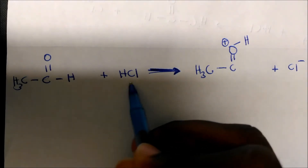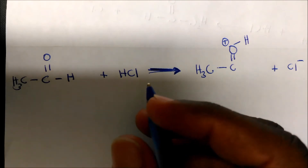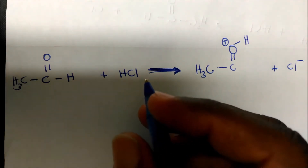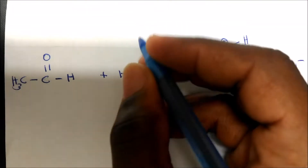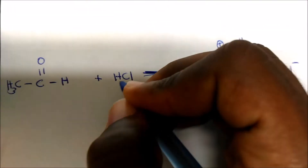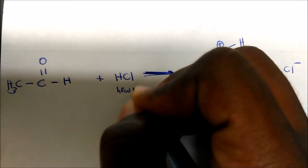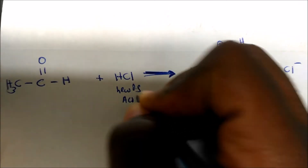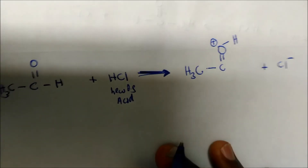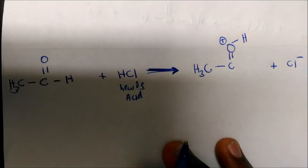Looking at this, we could say this is hydrochloric acid — that should be right out in front of you. You should know that hydrochloric acid is an acid, so in this case it will be my Lewis acid. So what is this telling me? It's going to accept — it's actually going to accept a proton.